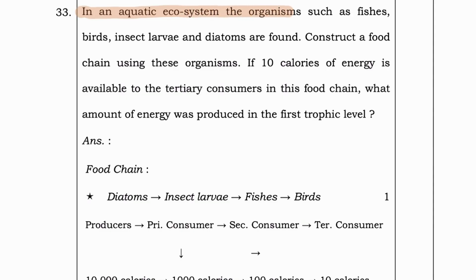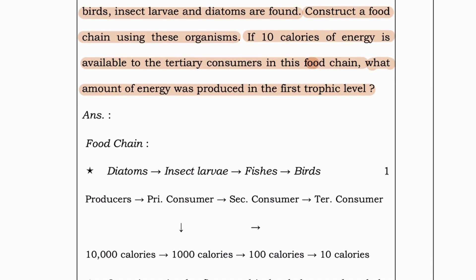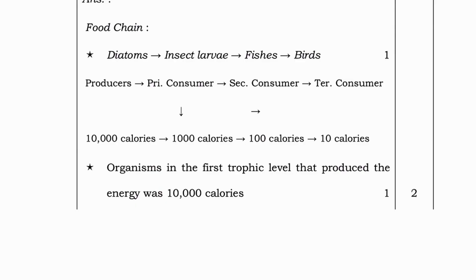Next question. In an aquatic ecosystem, the organisms such as fishes, birds, insects, larvae and diatoms are found. Construct a food chain using these organisms. If 10 calories of energy is available to the tertiary consumers in this food chain, what amount of energy was produced in the first trophic level? Food chain. Diatoms, insect larvae, fishes, birds.